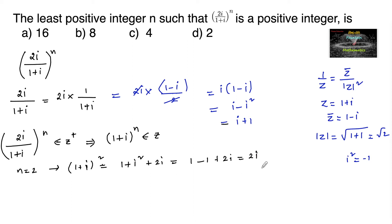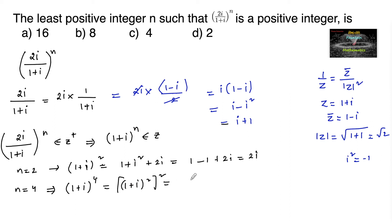Now let us consider n = 4, that is (1+i)^4 = ((1+i)^2)^2 = (2i)^2 = 4i² = 4×(−1) = −4. Since −4 is a negative integer, it is not a positive integer.